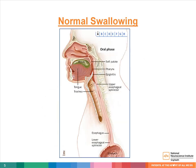Now we're going to talk about when food enters the mouth. This is an image of the lateral view of the head and neck region. Here are the lips, teeth, tongue, soft palate, epiglottis. This is down towards the lungs, and this is the esophagus at the back.